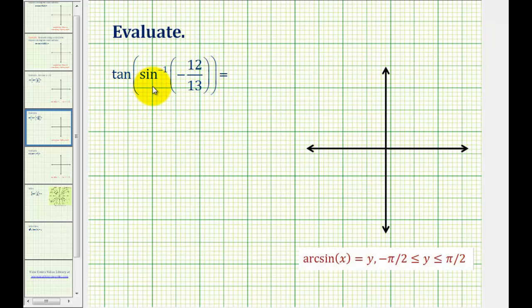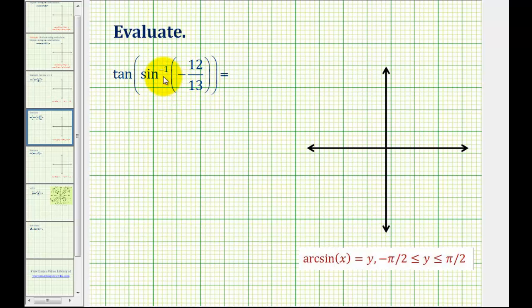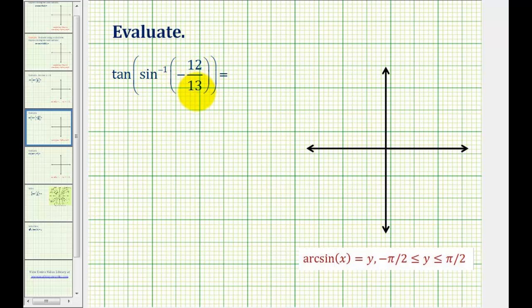We want to evaluate tangent of inverse sine of negative 12 thirteenths. Looking at the inner inverse trig expression, inverse sine of negative 12 thirteenths returns an angle, let's call it theta, that has a sine function value of negative 12 thirteenths.